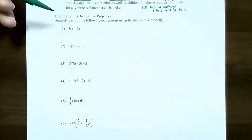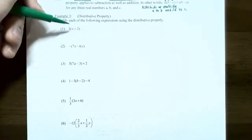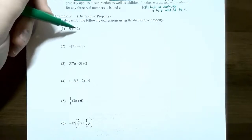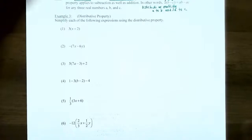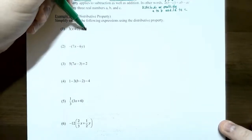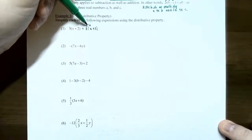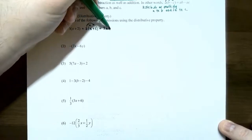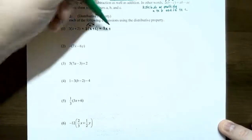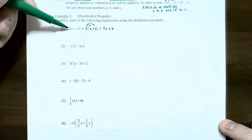Example 3: simplify each expression using the distributive property. Number 1: 3 times the quantity (x plus 2). You have a multiplication problem — 3 times the quantity — and also an addition problem, x plus 2. Distribute the 3 to the x and to the 2: 3 times x gives 3x, and keeping the sign, 3 times 2 is 6. So 3 times (x plus 2) equals 3x plus 6.